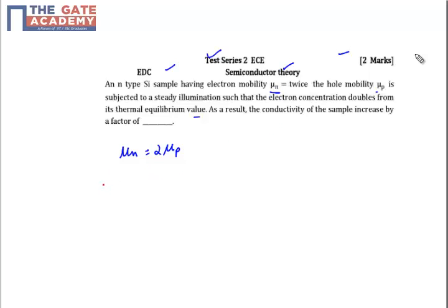Let's assume that because of the thermal generation, delta n electrons have been generated. And if thermal generation creates electrons, the same number of holes will also be created.